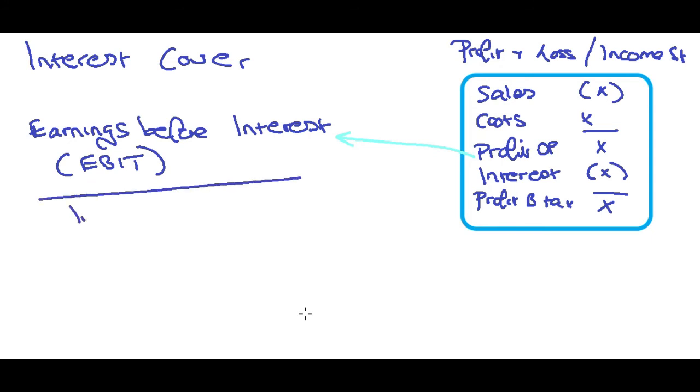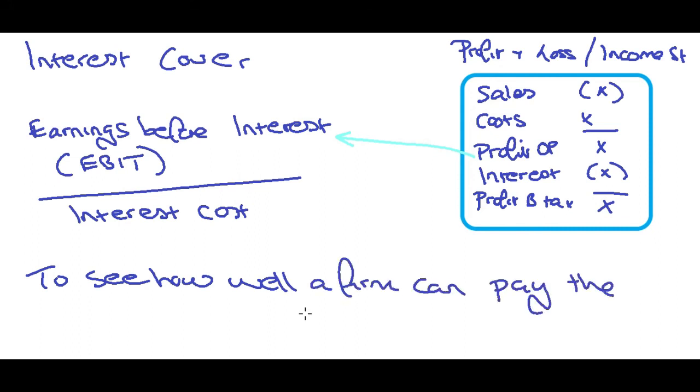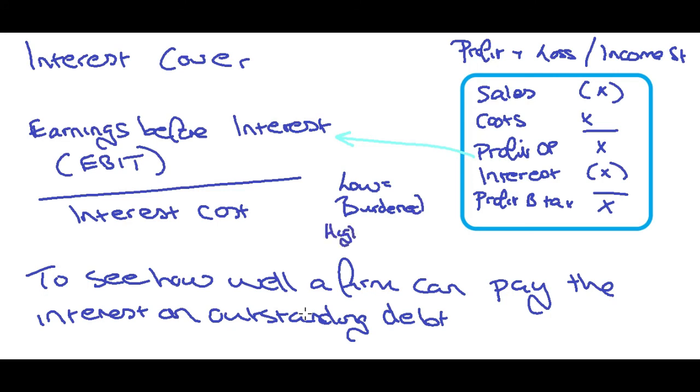So this calculation is used to see how well a firm can pay the interest on outstanding debt. Now if this figure is really low, it means that they are burdened by debt. So it means that they have to make a whole lot of profit to cover any interest. If the percentage is high, so again you need to times by 100 to get your percentage, then it means that they're making good profits and they've got more than enough to cover the interest. And lenders will look at this and say that you need an interest cover of 2.1% say, or they won't lend you any more money. So that's that.